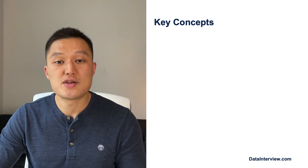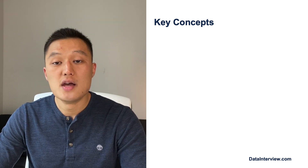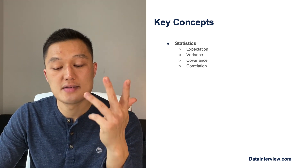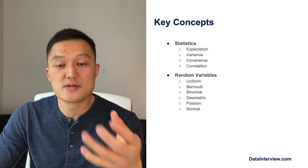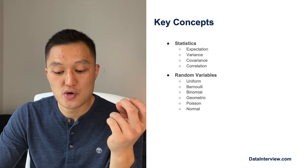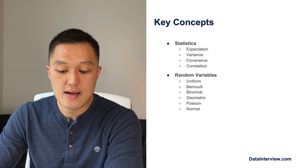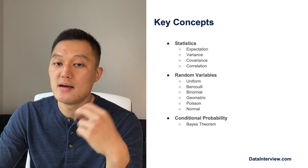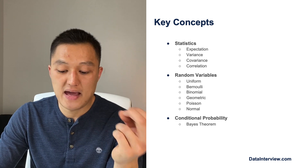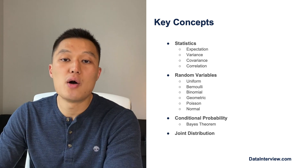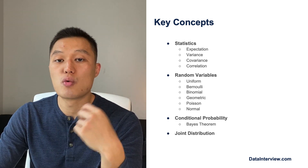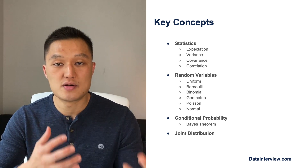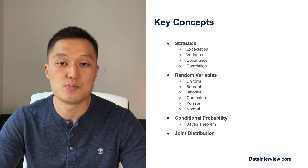There are a couple of things you need to know in terms of statistics. You definitely need to know how to calculate expectation, variance, covariance, and correlation. You need to know random variables and distributions such as uniform, Bernoulli, binomial, geometric, Poisson, and normal. You have to know conditional probability and calculating using Bayes' theorem. And you also have to know joint distributions — when working with multiple distributions, how do you calculate the probability of a certain outcome?